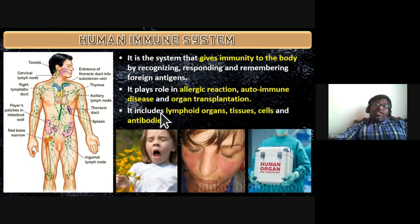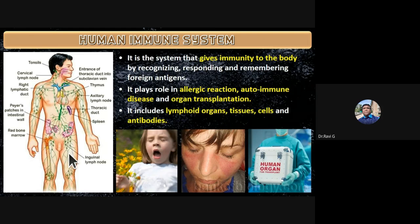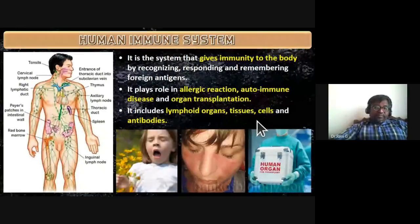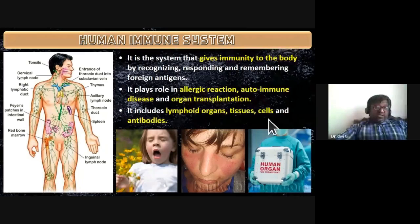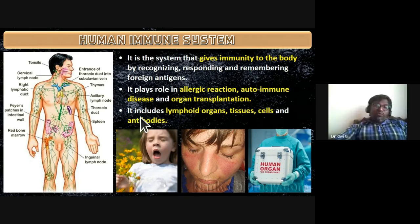The human immune system is made up of lymphoid organs, lymph nodes, lymph, tissues, cells, and antibodies. There is cell-mediated immunity, and lymphocytes — as part of the WBC — also provide immunity and antibodies. So the components of the immune system include lymphoid organs, tissues, cells, and antibodies.